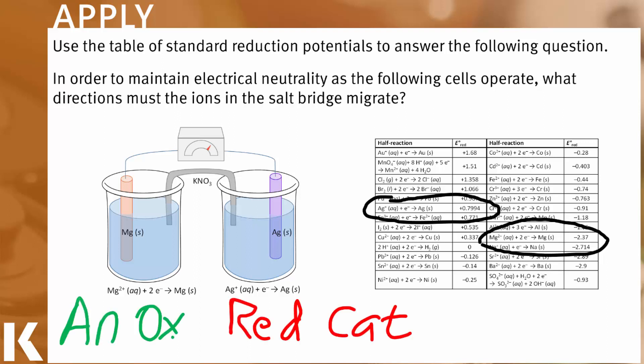Therefore, the silver side will be the cathode where the reduction will happen, and the magnesium side will be the anode where the oxidation will happen. So electrons will flow from anode to cathode, as they always do in all types of electrochemical cells.